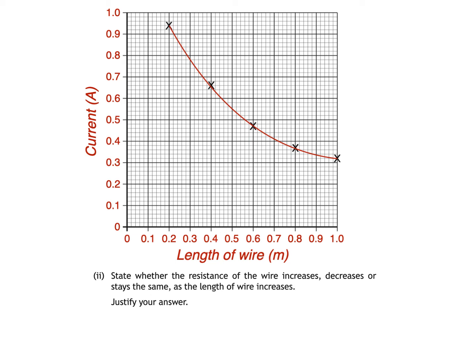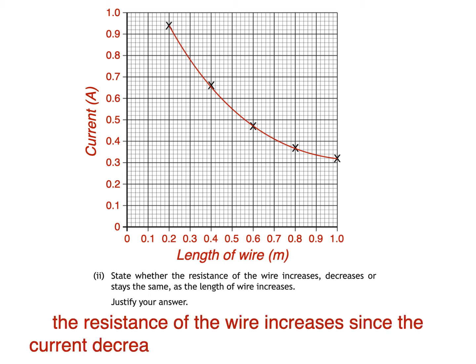As the length of wire increases and we move from left to right on the graph we can clearly see that the current decreases. So for this to happen the resistance of the wire must have increased. When we're asked to justify your answer we're basically stating what information we've used in order to arrive at that answer. The fact that current decreases as the length of wire increases.